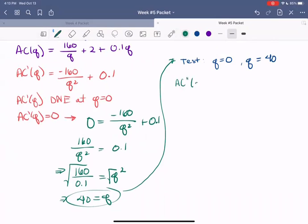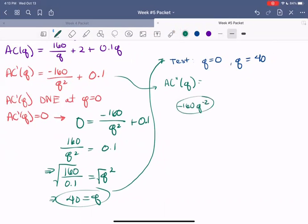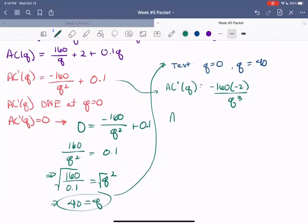So we're going to compute AC double prime of Q. So taking that derivative of our derivative, using that power rule, by converting Q to the negative, or 1 over Q squared to Q to the negative 2. So that would look like negative 160 times Q to the negative 2. So taking the derivative there would get us negative 160 times negative 2, all over Q cubed. And then the derivative of 0.1 is just 0. Good catch, everyone. So just multiplying that out, AC double prime of Q is equal to 320 over Q cubed, and we now are positive, because we have two negatives.